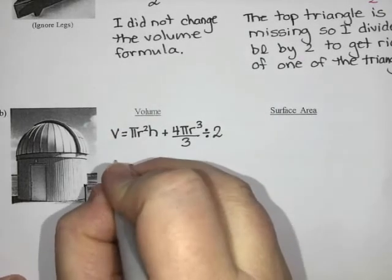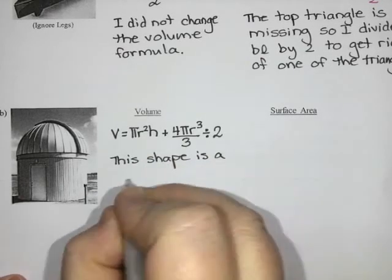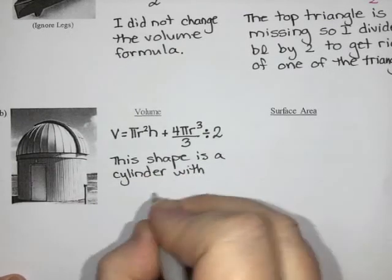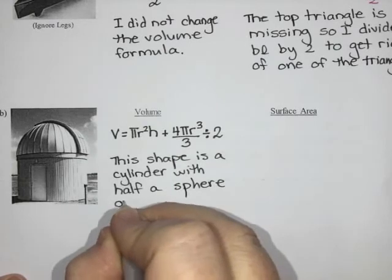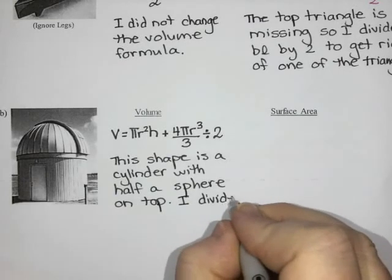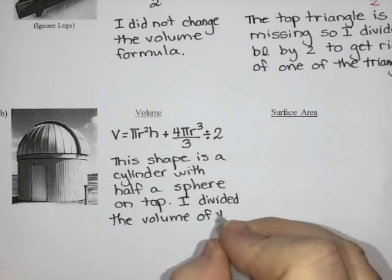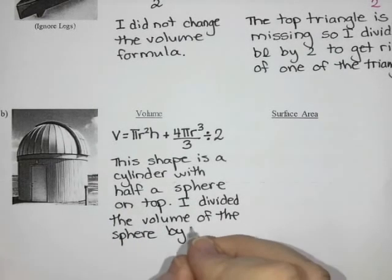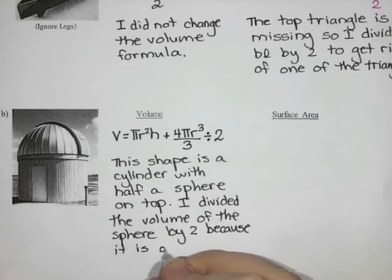The reasoning that I'm going to give is this shape is a cylinder with half of a sphere on top. I divided the volume of the sphere by two because it is only half.